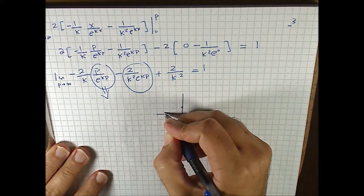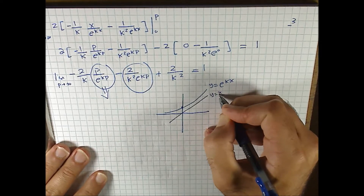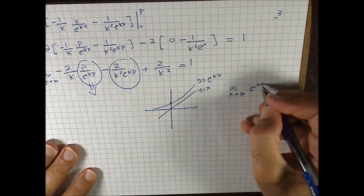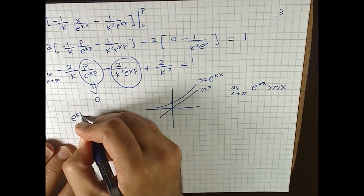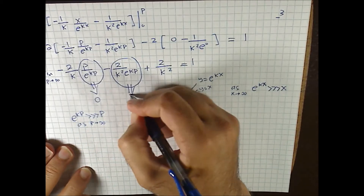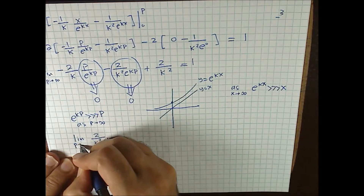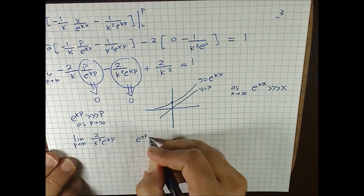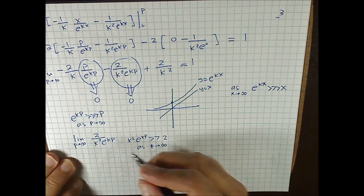Here's a graph of e to the kx, provided k is positive, and here's a graph of y equals x. As x goes to infinity, e to the kx — the exponential function — will be much larger than the polynomial x. For this reason, the ratio p over e to the kp goes to zero as p goes to infinity. Similarly, 2 over k squared divided by e to the kp also goes to zero, because e to the kp is much larger than 2 as p goes to infinity. So both limit terms approach zero.